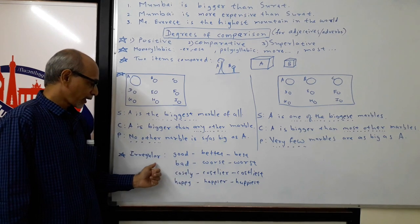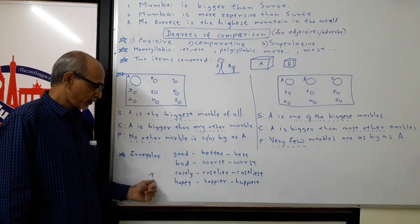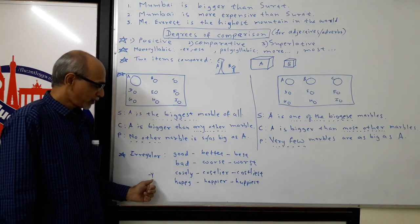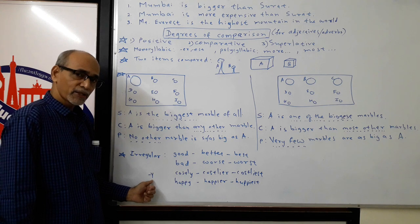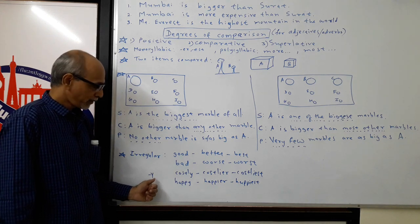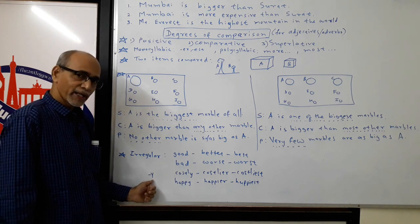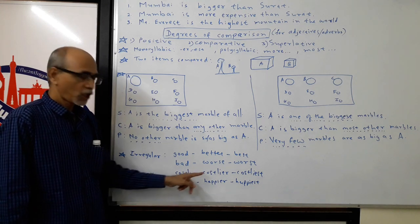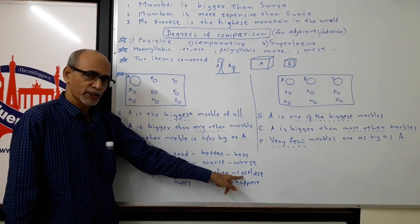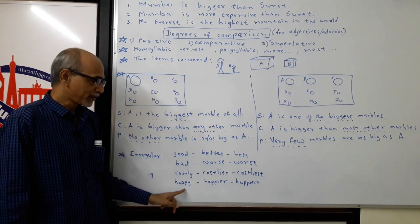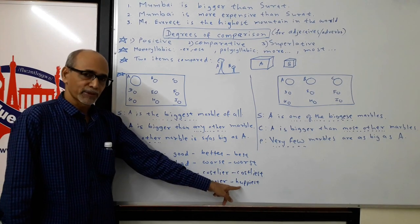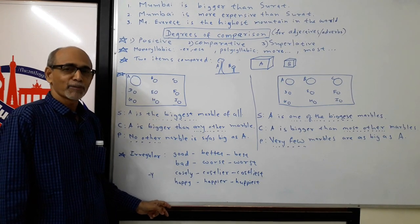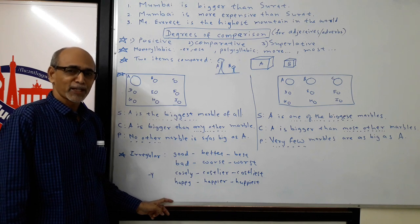Another irregular pattern is for a y-ending adjective or adverb. When the adjective or adverb ends in y, we convert y into i and then add -er and -est. For example, costly becomes costlier and costliest. Similarly, happy, happier, happiest. After watching this video, you should be able to say I am the happiest man in the world.